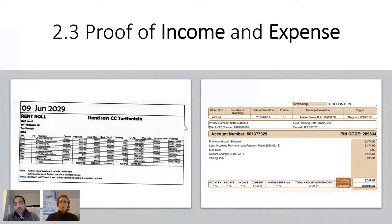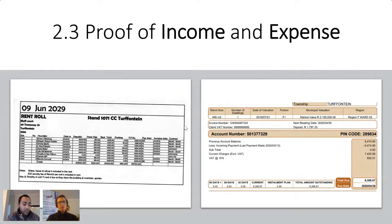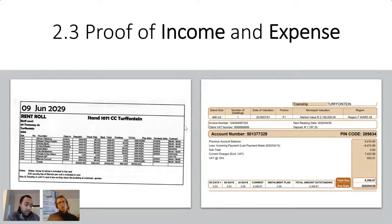Proof of income and expense is critical. When you're starting out on the property journey, your estate agent is going to be your main source of information. You'll look on Property24 and the estate agent might say you can make twenty thousand rand rent, or fifty, or a hundred thousand rand. Remember, the estate agent is motivated by commissions, so they might tell you what they think you want to hear to help you make a decision.